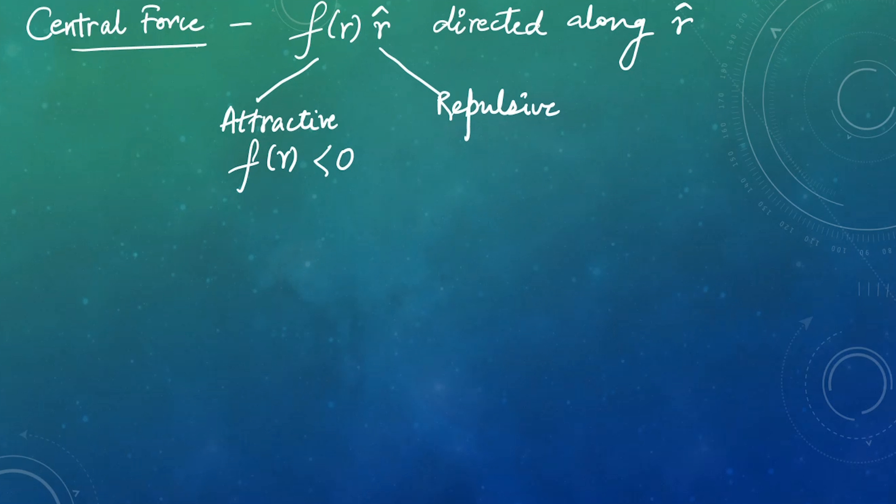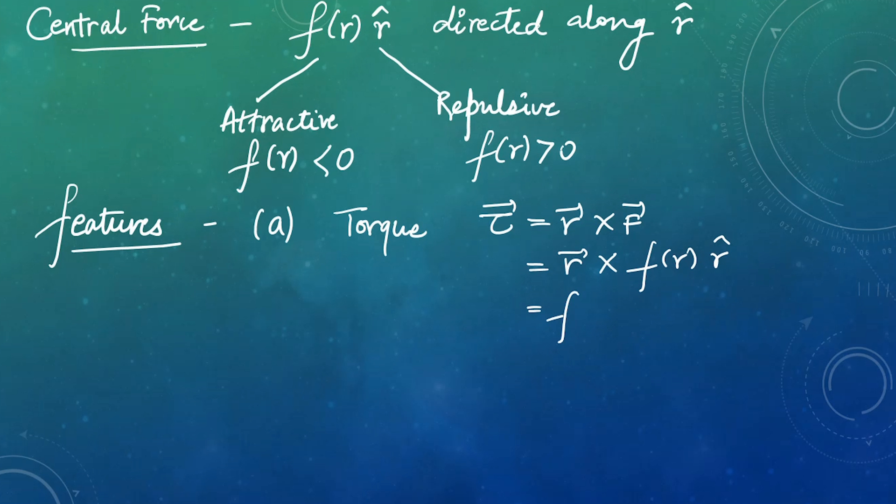If F(r) is less than zero then it is attractive, and if F(r) is more than zero then it is repulsive. This is the basic thing. Let's start with its features, starting with the first feature. If a particle is moving under a central force, torque is R cross F, where F is a central force.